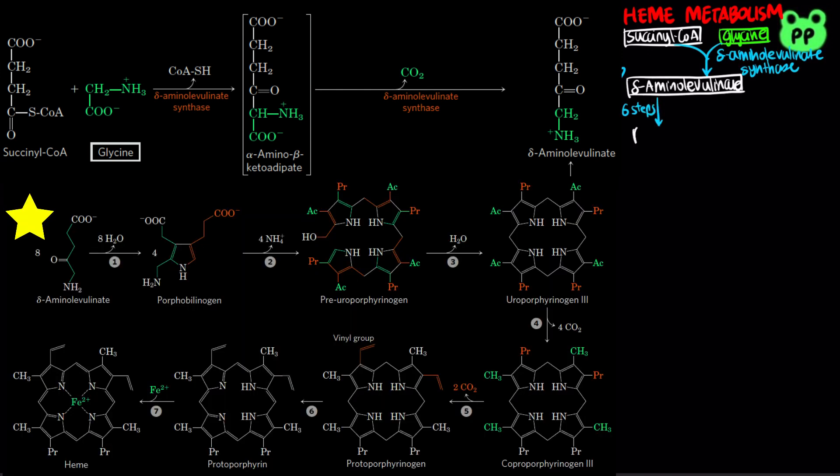Delta-aminolevulinate undergoes a series of six reactions to form protoporphyrin, the organic component of heme. Protoporphyrin conjugates with iron cation to form heme by ferrochelatase.